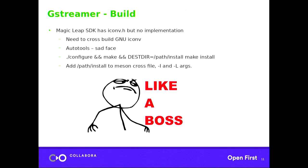The first issue I hit when building GStreamer is that GLib depends on iconv, and the Magic Leap SDK actually has the iconv.h header but surprisingly doesn't have the implementation — the symbols just aren't there. So I had to build iconv from the GNU project using autotools: configure, make, make install. Then I added the -L and -I flags in the Meson cross file to pick up the iconv implementation I just built.